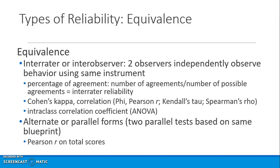You can also calculate an intraclass correlation coefficient using ANOVA, meaning two or more rater groups can be used. Or you can create alternate versions of the instrument and calculate parallel reliability — another type of equivalence — and calculate Pearson R on total scores if you have interval-level data.